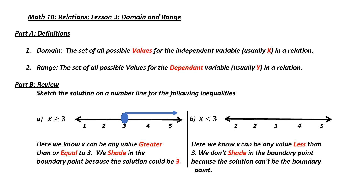Now for part b. Again, we identify our boundary point, which is 3. Notice this is not shaded in because x is less than 3, not equal to 3. Now we figure out which way the arrow is going to go. Since x is less than 3, I draw my arrow to the numbers that are below 3. I could use a test point — take 2, put it in there. Is 2 less than 3? Yes.